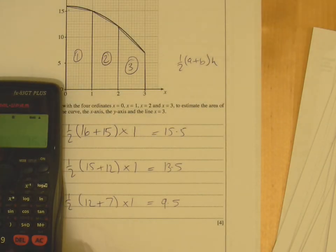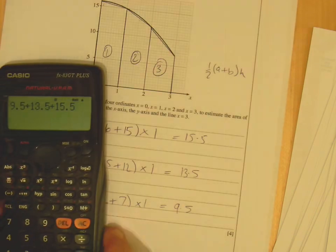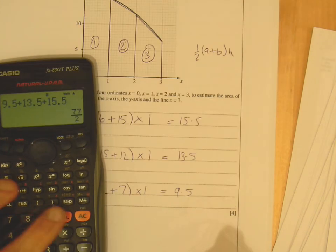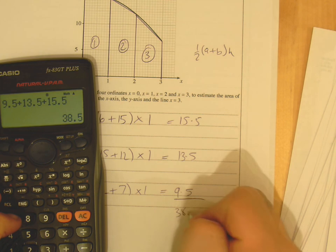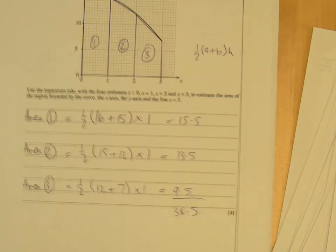So, all I've got to do then is add these up, change that there, did that wrong, just add these up, and I get my answer then, which is 38.5, okay, so that's the area there.